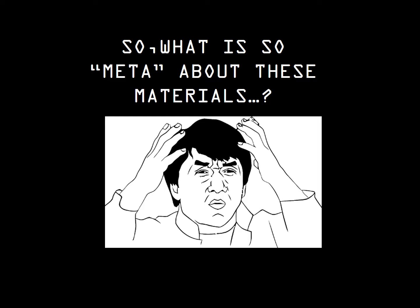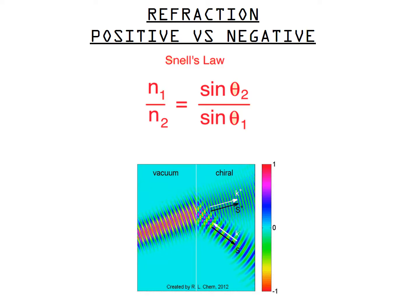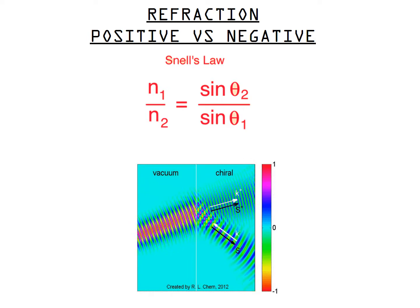Meta is a Greek word for 'beyond.' So what is so meta about these materials — that is, what differentiates them from materials found commonly in nature? Before we delve into the concept of metamaterials altogether, let us hit the basics and talk about refraction. Refraction is the bending of light when it passes from one transparent medium to another, and this phenomenon is governed by Snell's law. In the case of metamaterials, the value of refractive index is negative, and hence the light bends in the opposite direction as shown in the graphic.